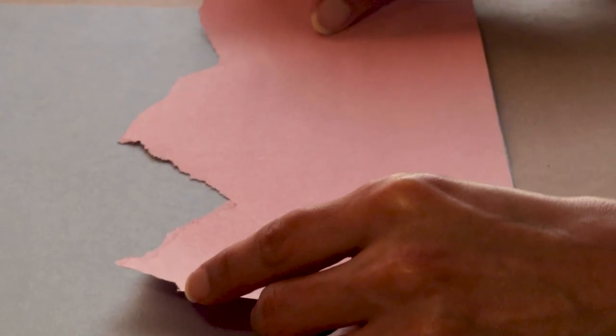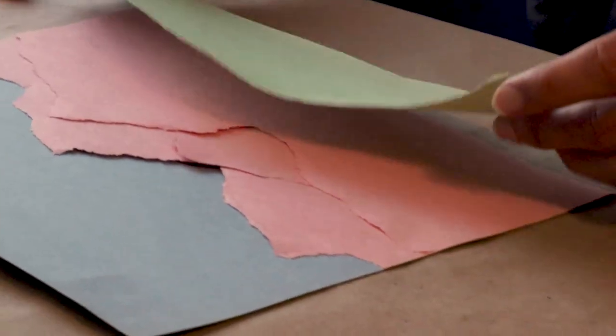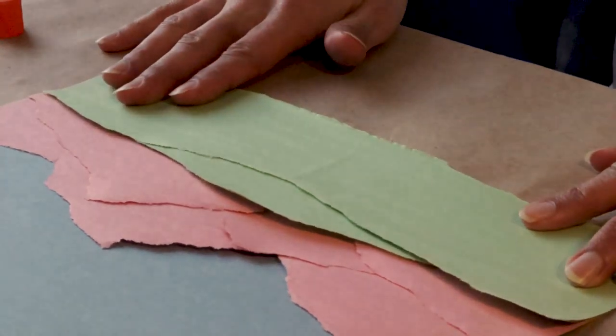For the quick example, I took two sheets of pink paper for the mountains and two sheets of green paper for the hills.